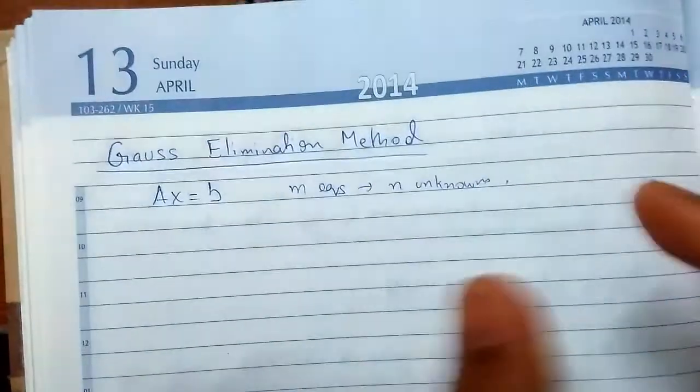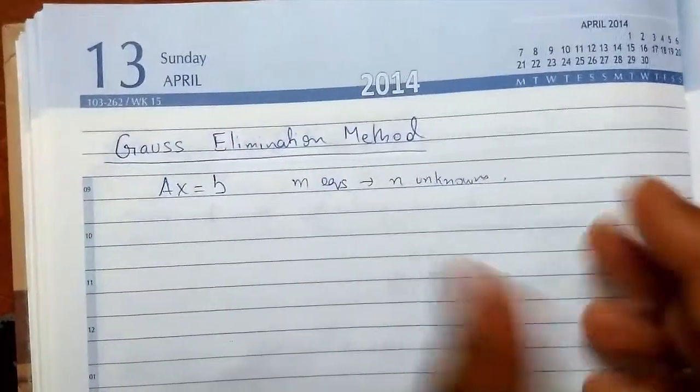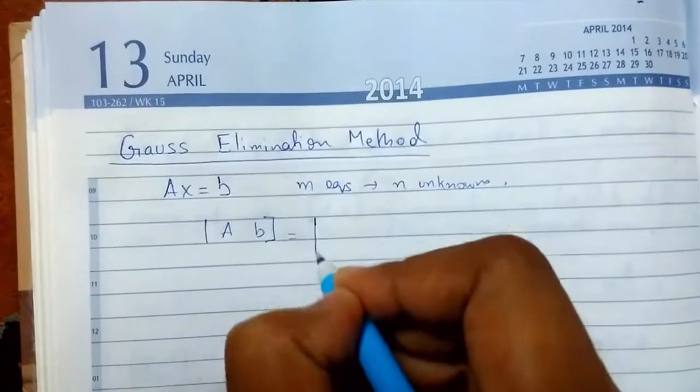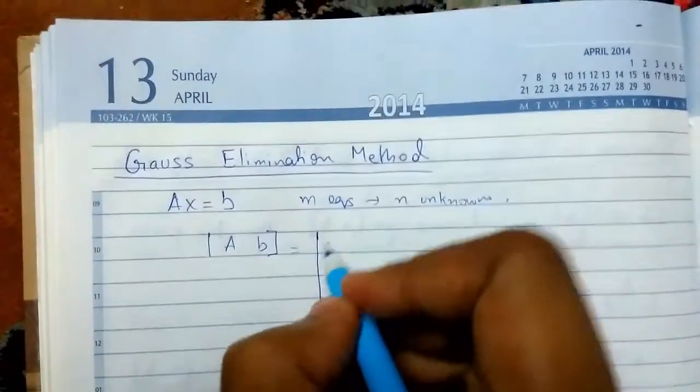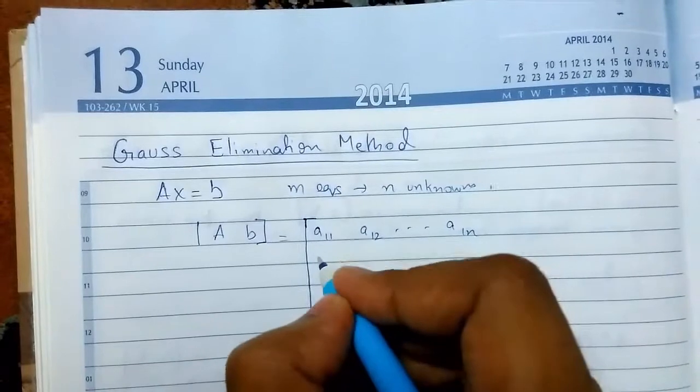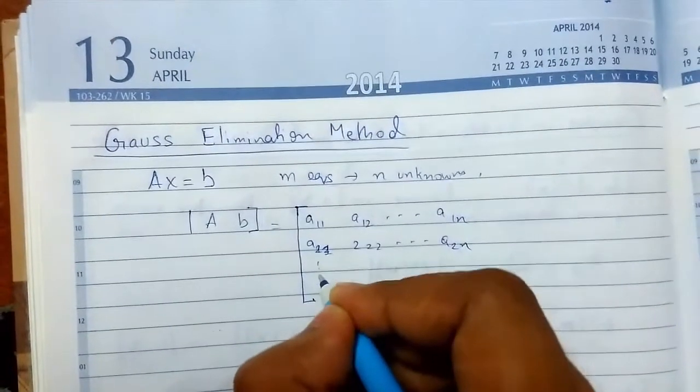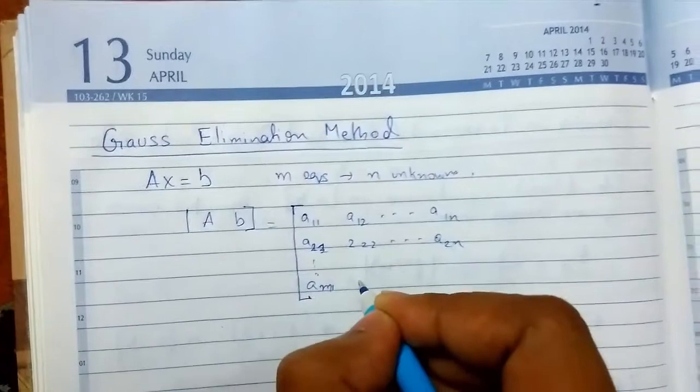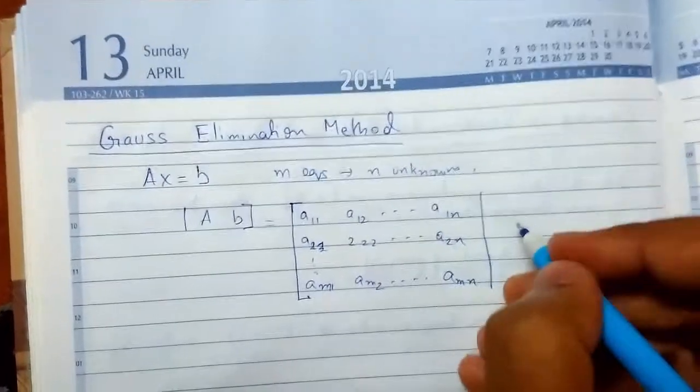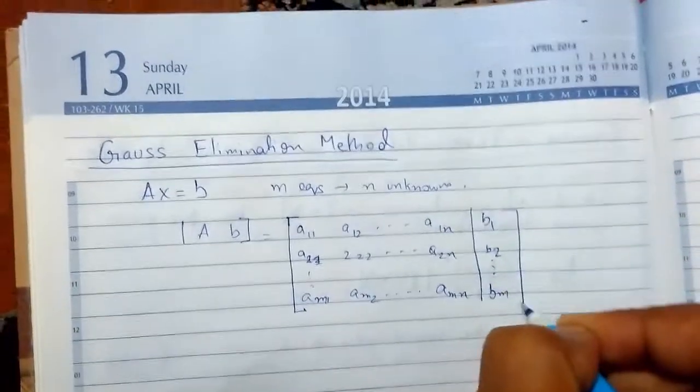Gauss elimination method is a method of solving linear systems of equations by bringing the augmented matrix. So this is how it looks. The augmented matrix - suppose I'm writing a₁₁ a₁₂ up to a₁ₙ, this is a₂₁ a₂₂ a₂ₙ and so on aₘ₁ aₘ₂ up to aₘₙ. So m equations and n unknowns and these are the constants - b₁, b₂... bₘ. So this is the augmented matrix.